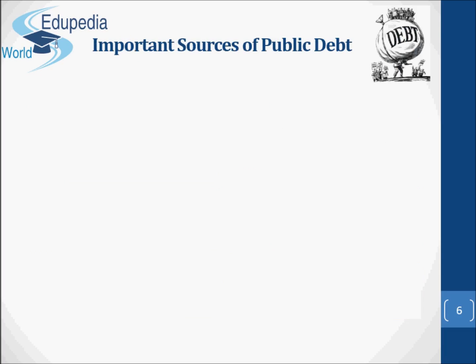Every government has two major sources of borrowing: internal and external. Internally, the government can borrow from individuals, financial institutions, commercial banks and from the central bank. Externally, the governments borrow from individuals and banks, international institutions like the IBRD, the IMF, the African Development Bank, etc., and from foreign governments.